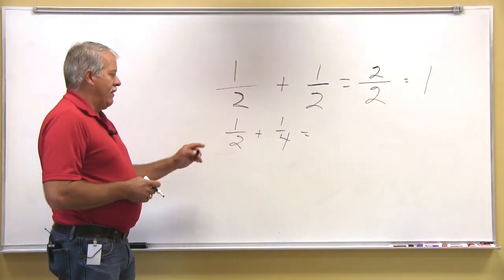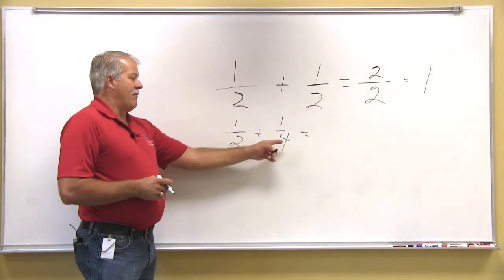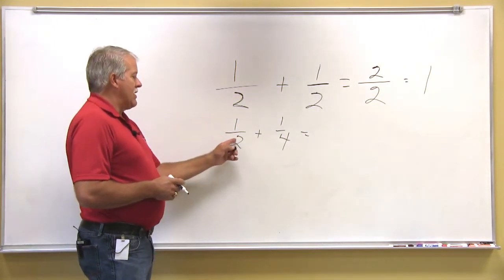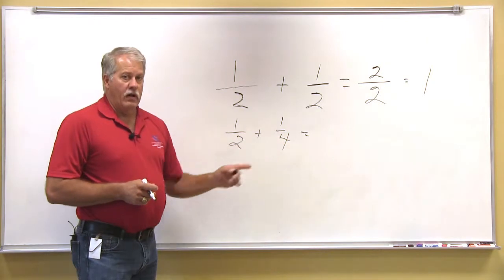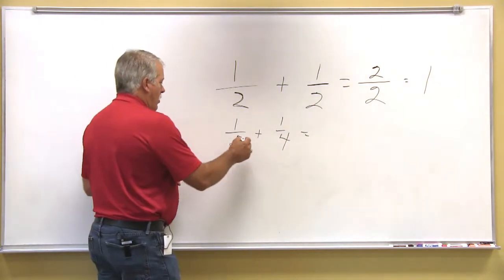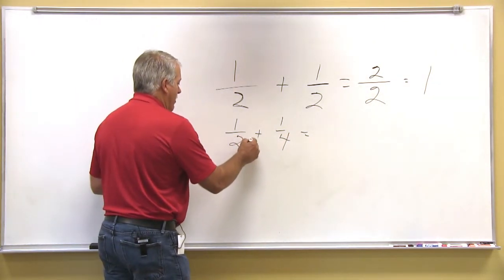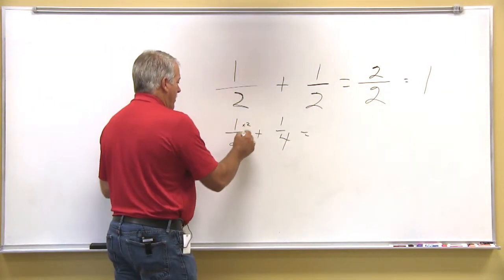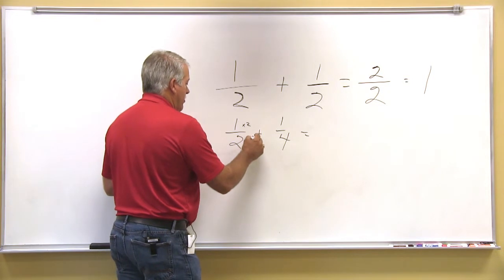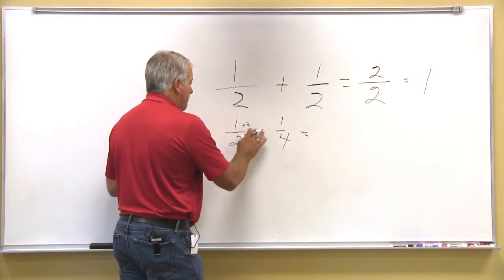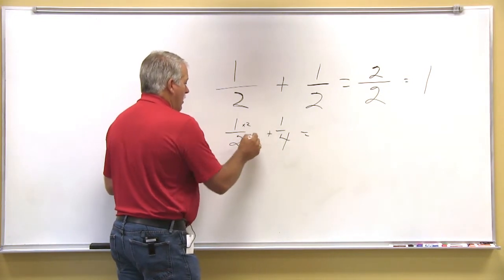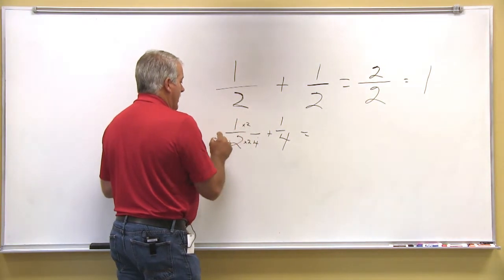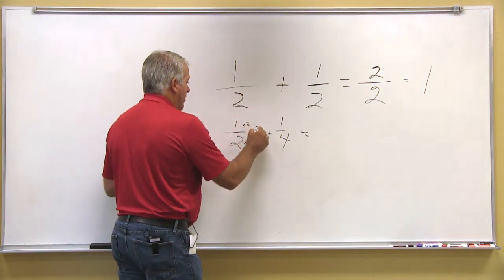So to do that, we can make this the same by looking at that one. What times 2 will equal 4. Whatever you do to the bottom number, you have to do to the top number. So if I multiply the bottom number times 2, that will give me 4. I multiply the top number times 2, that will give me 2.